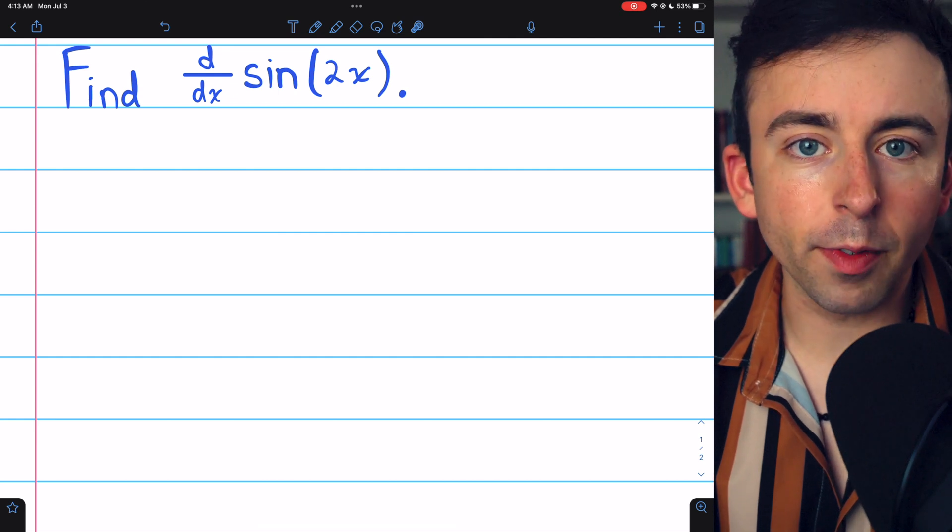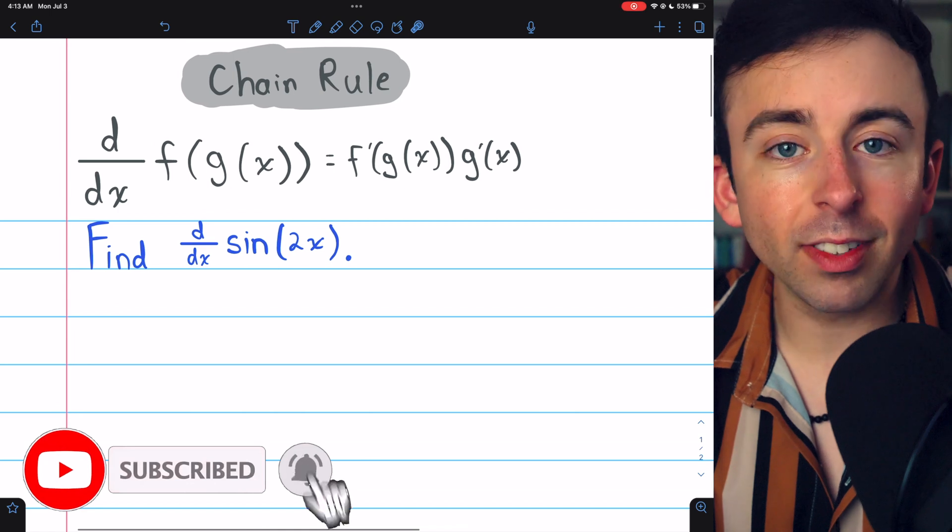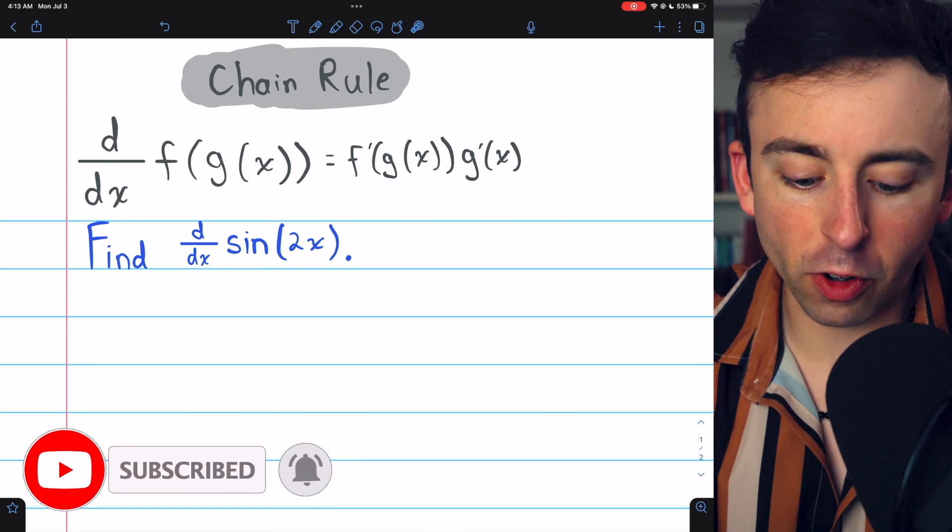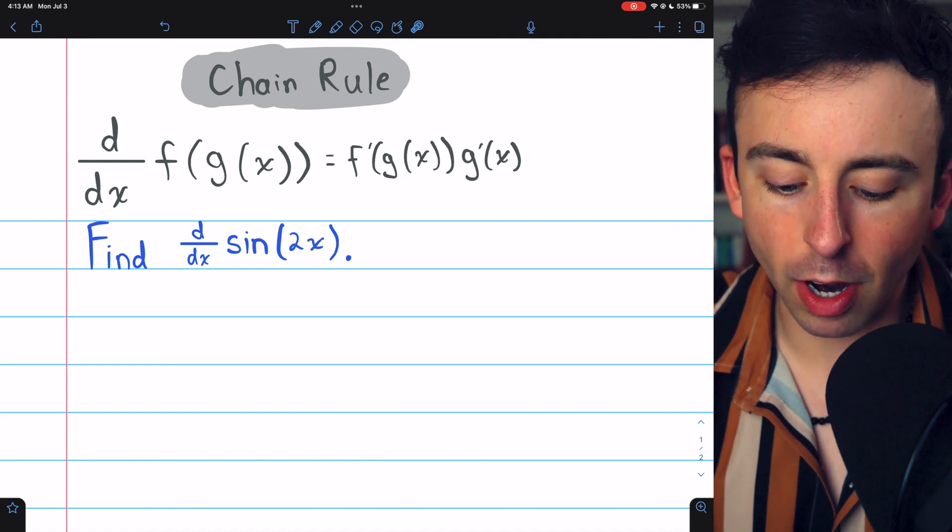Sine of 2x is a composite function, so to take its derivative, we need to use the chain rule, which says the derivative of a composite function f of g of x is f prime of g of x multiplied by g prime of x.